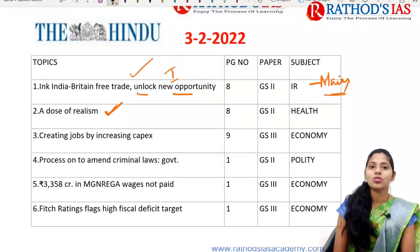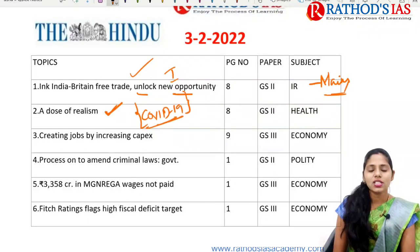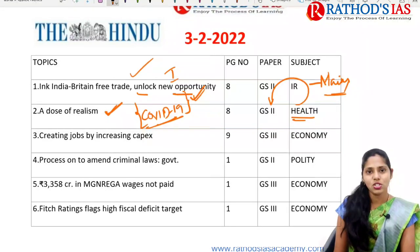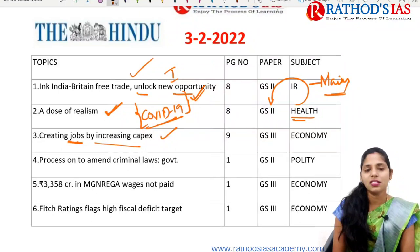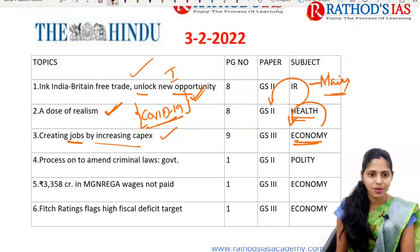The next topic is about 'A Dose of Realism,' which mainly talks about our COVID-19 pandemic. Recently WHO gave a statement, and regarding that, what can be done is given in this article. This article is important from your health budget, which mainly comes under GS Paper 2. The next topic is regarding creating jobs by increasing capital expenditure — an analysis of the recent budget regarding capital expenditure, important from your economy under GS Paper 3.